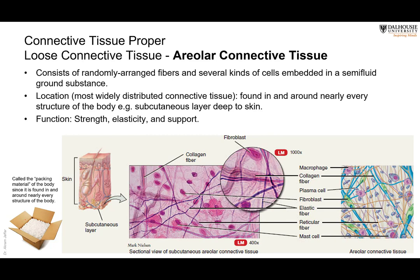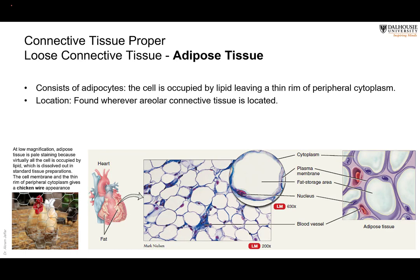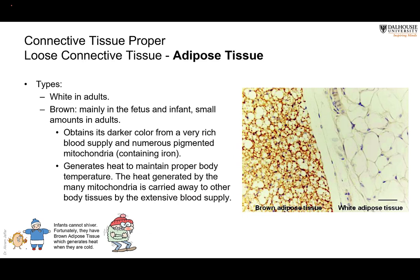Adipose tissue is another type of loose connective tissue containing fat cells that store fat inside them. There is a large fat droplet with a thin rim of cytoplasm around it, giving cells a 'chicken wire' appearance under the microscope. Adipose tissue is very close to the areolar connective tissue. It comes in two types: white adipose tissue, which predominates in adults, and brown adipose tissue found in newborns.